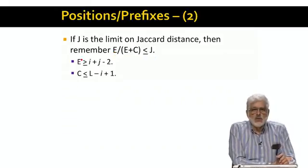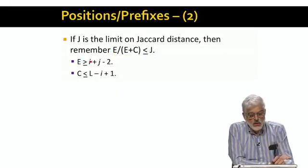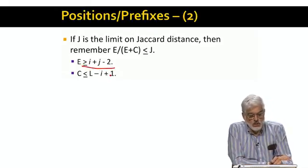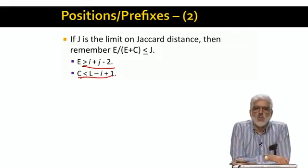If we let E be as low as possible, that is I plus J minus 2, and we let C be as large as possible, L minus I plus 1, then we can treat these inequalities as equalities.